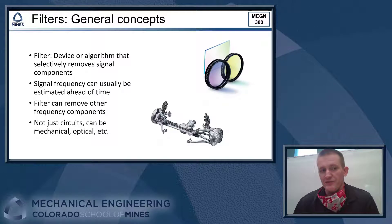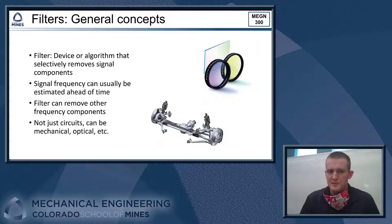A filter is some sort of device or algorithm that's going to selectively remove signal components. Normally we're talking about removing components based off their frequency, so a filter will pass certain frequencies and then stop other frequencies. The filter can be electronic like we do in this class, but it doesn't necessarily have to be. It can be mechanical, so like your car's suspension is a filter that removes certain frequencies and vibrations so that you don't feel them in the cabin. They can also be optical, so we can talk about filtering light by different colors, which is the light's frequency.